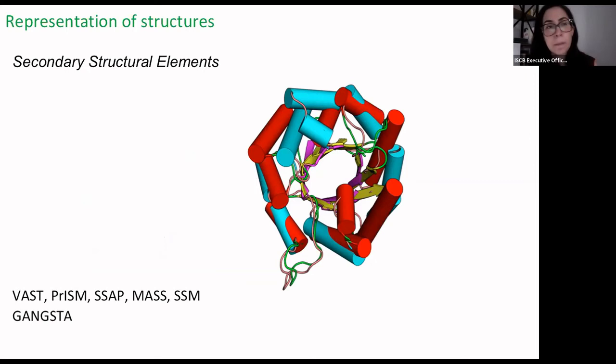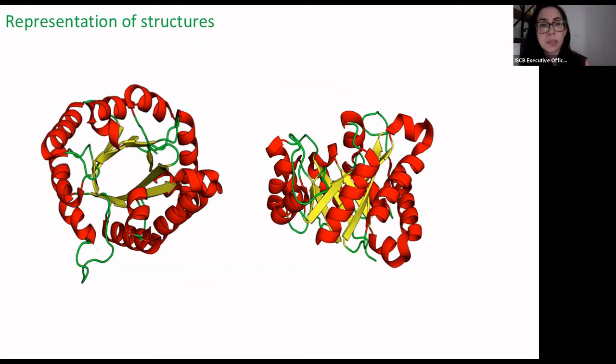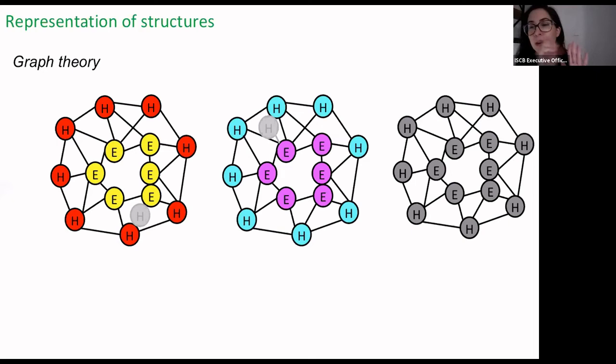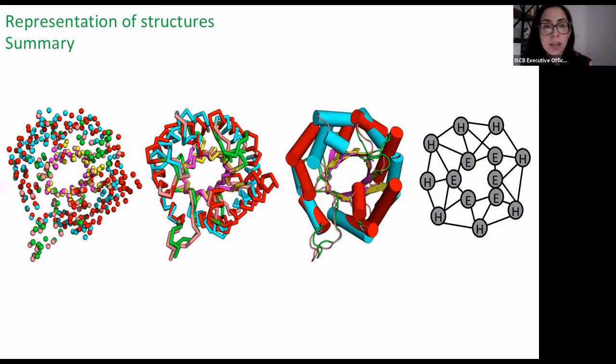A newer field represents protein structures as graphs. We reduce the search space by representing the fold as a graph, match these graphs together, remove what differs, and superimpose what is similar. These are very fast algorithms and can be very accurate. Many of these algorithms are being developed right now, giving an overall view of how different algorithms handle the information we feed them.